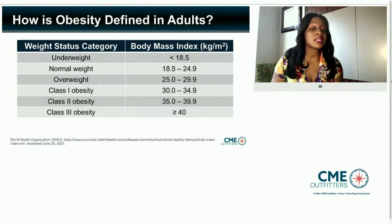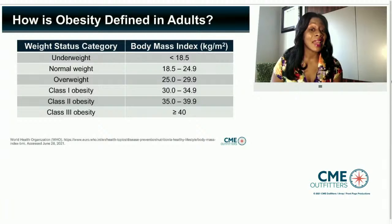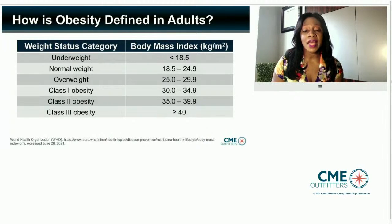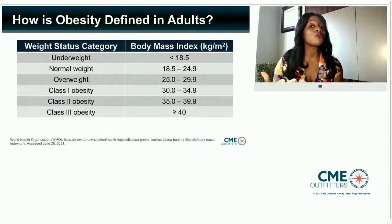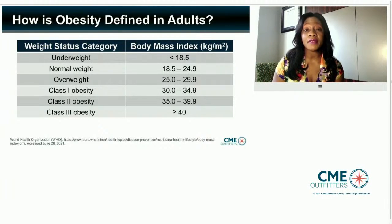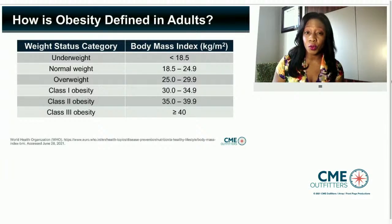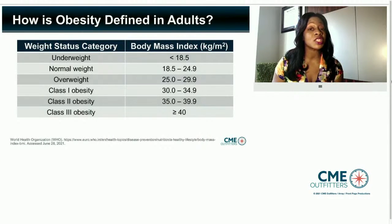A person is considered to have underweight if their BMI is below 18.5. A person is considered to have normal weight status if their BMI is between 18.5 and 24.9. A person has pre-obesity or overweight when their BMI is between 25 and 29.9. And then we get into our three classes of obesity — class one, class two, and class three — what we consider to be mild, moderate, and severe obesity.